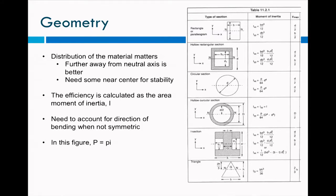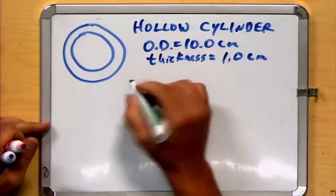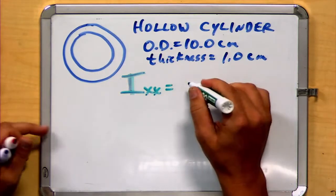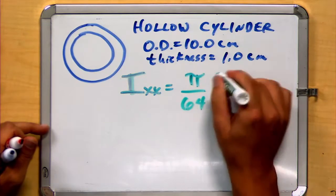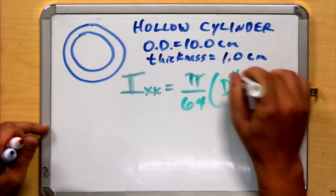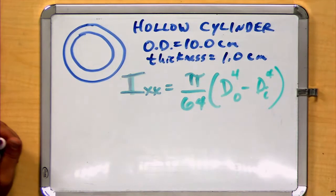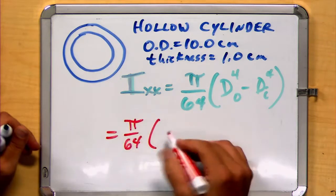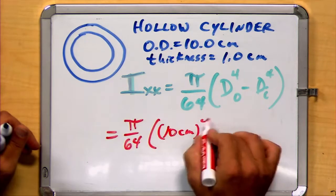So taking that information back to our calculation, we can write this value that Ixx and Iyy are equal to pi divided by 64 times the outer diameter minus the inner diameter, where each one is to the fourth power first. Notice this makes sense. It's going to give us a value in length to the fourth power. Well, now it's simply a matter of plugging in the appropriate numbers. Pi over 64 times 10 centimeters to the fourth power minus, in this particular case, we said the thickness was one centimeter.